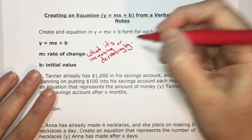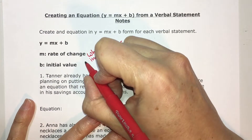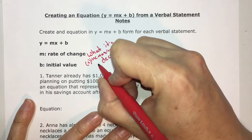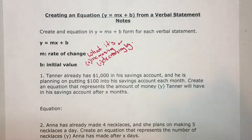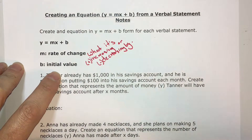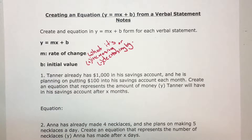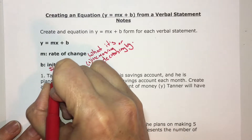If you're talking about increasing and decreasing in math, we have to think of positive and negative. If it's increasing, it would be a positive value, and if it's decreasing, a negative value. b is the y-intercept or initial value — just different ways of saying it. Initial value means a starting point — what did you start with, where did you start.